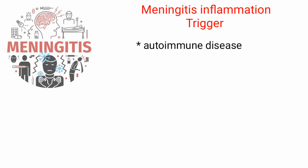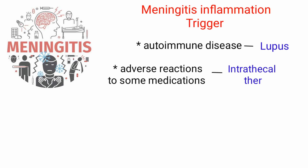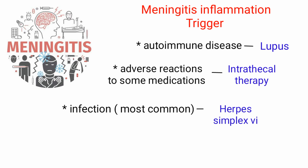Meningitis needs some kind of trigger for the inflammation. It could be an autoimmune disease where the body attacks itself, like lupus, or the body having an adverse reaction to some medications like intrathecal therapy. But by far, infection is the most common trigger for meningitis across all age groups — like with the herpes simplex virus, for example.